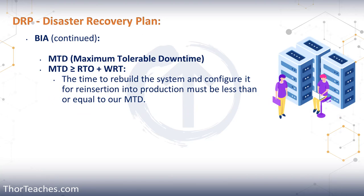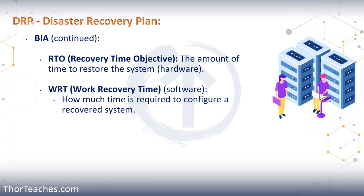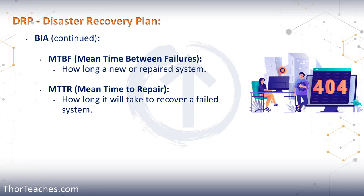I have also mentioned MTD — maximum tolerable downtime — before. It is how long a system can be down, and it is made up of two variables: RTO, recovery time objective, and WRT, work recovery time. The RTO is the amount of time it will take us to restore the system — that is the hardware. The WRT is the software side: how much time it's going to take us to configure the system, operating system, programs, load all the backups, and have the system back into production.